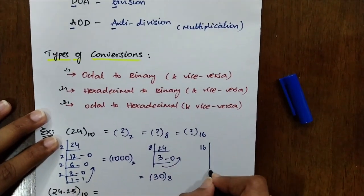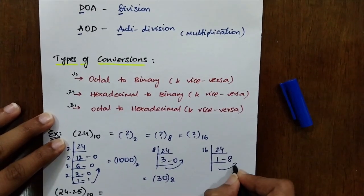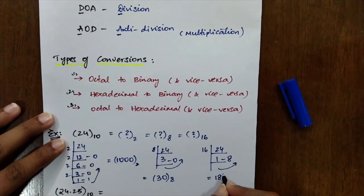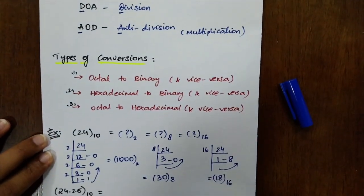Now, again with 16. Coming to 16, it is 24, right? It will be 1 with a remainder 8. Again going in the upward direction, 18 is the representation in hexadecimal form. So as you are clear with this example, let's get into the other one.